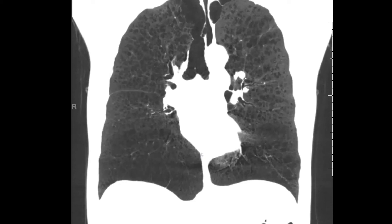The third cause — very rare, I've only seen a handful of cases — that can cause basal predominant panlobular emphysema is hypocomplementemic urticarial vasculitic syndrome. The name tells you what to look for: someone with recurrent urticarial rashes and low complement levels, and you know it's associated with panlobular emphysema.